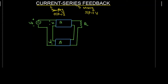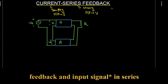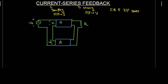Series also indicates that the feedback network and the input network are going to be in series. So we are going to have a feedback network and input network in series. This is the configuration of the current series feedback amplifier.